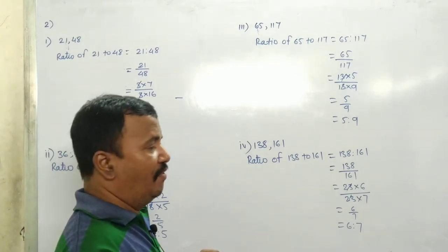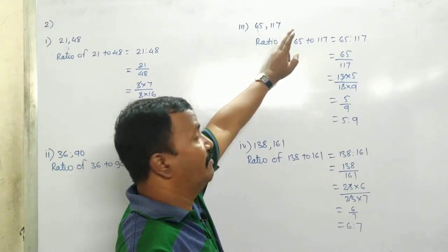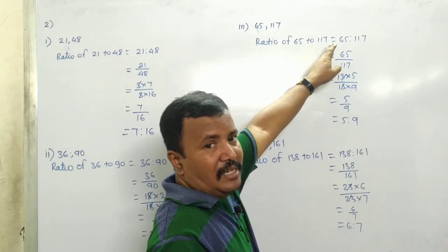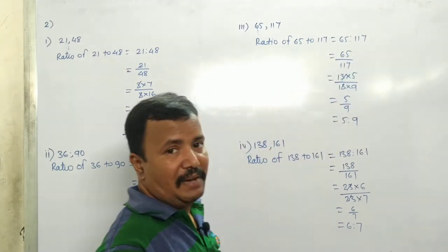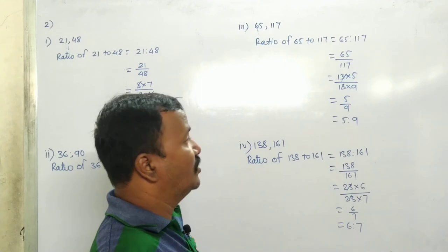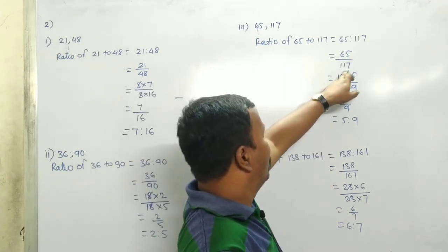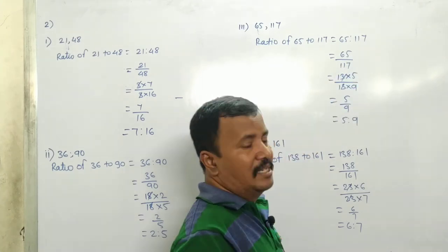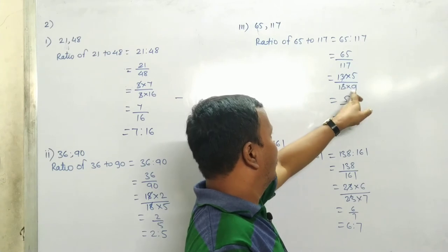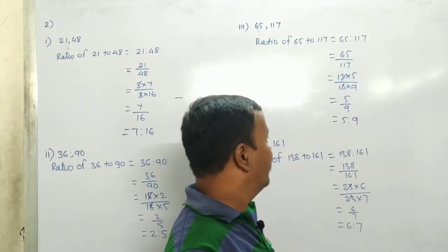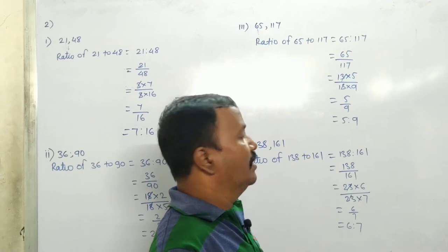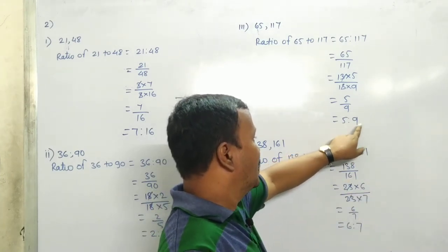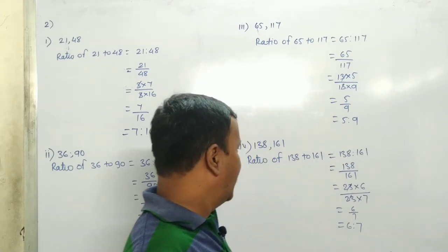Third is 65 and 117. Ratio of 65 to 117 equals 65 divided by 117. 13 times 5 is 65, 13 times 9 is 117. 13, 13 cancel. 5 upon 9. Answer is 5 ratio 9.